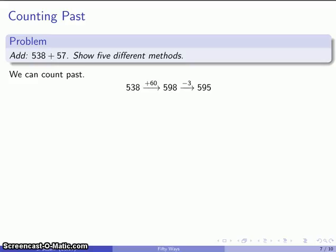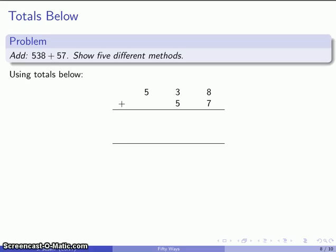Well, let's look at something that looks a little bit more like the standard algorithm, except we'll do this as totals below. And so, again, I'll add the numbers 538 plus 57, and the totals below method I'm just going to add within the column. So, 5 and nothing is 5. 3 and 5 gives me 8. 8 and 7 gives me 15, which I'll write this way. There's my totals below, and now I'll add a second time. There's 5 and 9 and 5 as my final answer.